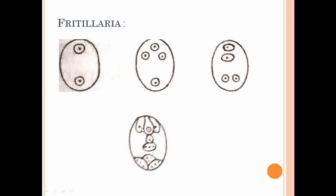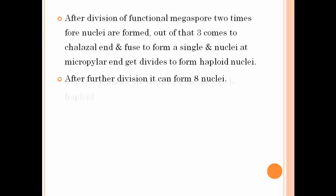After 8 nuclei form, three migrate to the micropylar end as the egg apparatus, three at the chalazal end function as antipodal cells (which are triploid), and the middle two function as the secondary nucleus (one nucleus being triploid). The Fritillaria type is observed in the genera Lilium, Piper, and Tamarix.